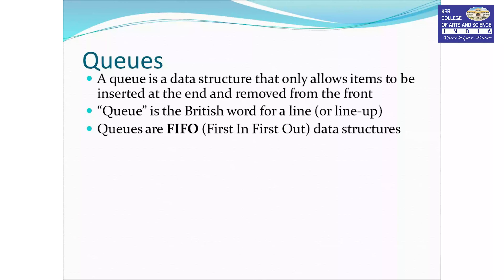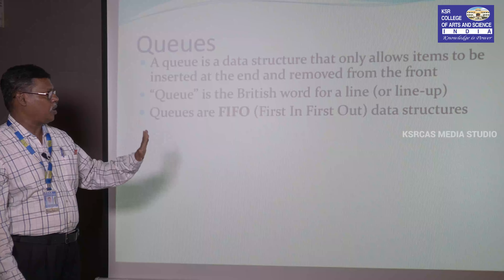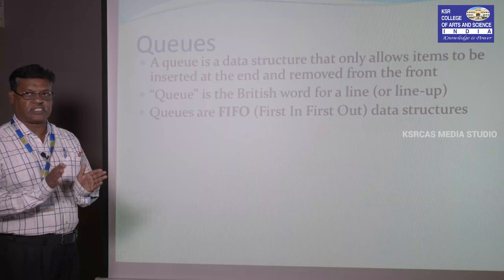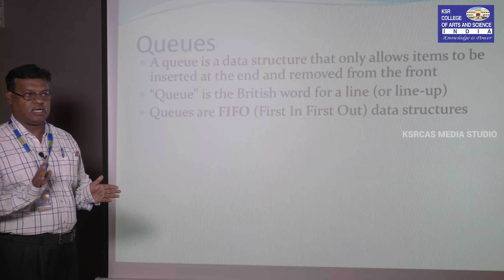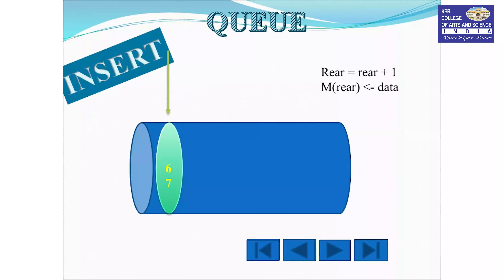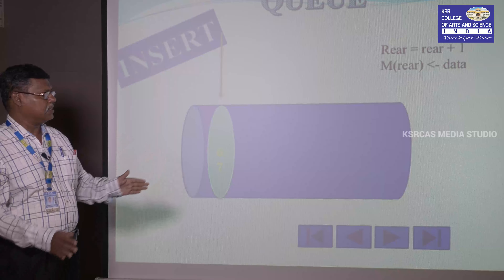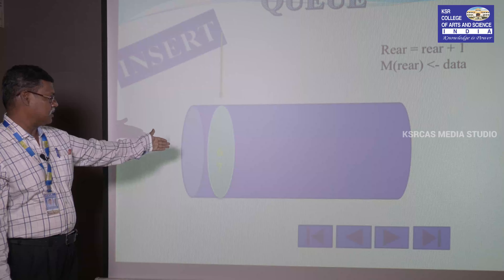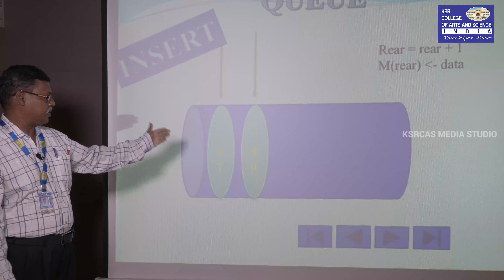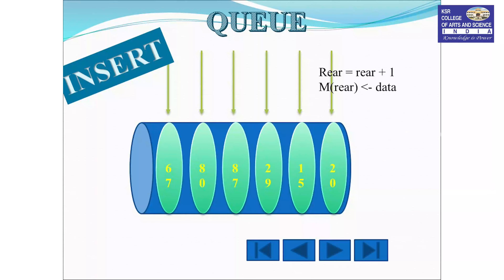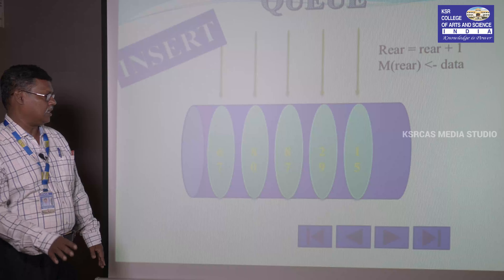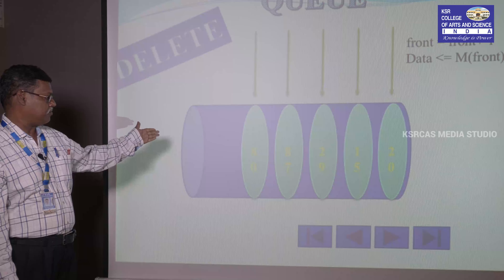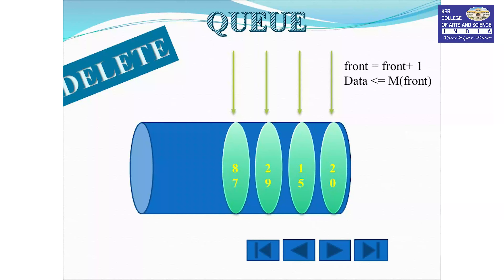The next concept is Queue — another linear data structure. We perform two operations: enqueue (insertion) and dequeue (deletion). The concept is First In First Out — whichever element is inserted first is deleted first. Insertion takes place at the rear and deletion takes place at the front. We insert elements 67, 80, 87, 29, 15, and 20, until the queue is full. Then we delete from the front end, removing elements in order.